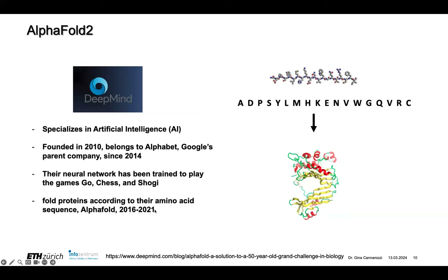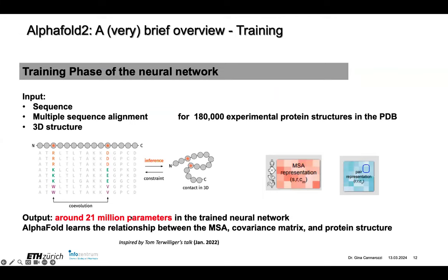They attacked the protein folding problem starting in 2016. An overview of AlphaFold2: it's a neural network with a training phase and a prediction phase. In the training phase, you input known sequences and structures. When they trained this, they trained it on 180,000 experimental protein structures from the PDB.